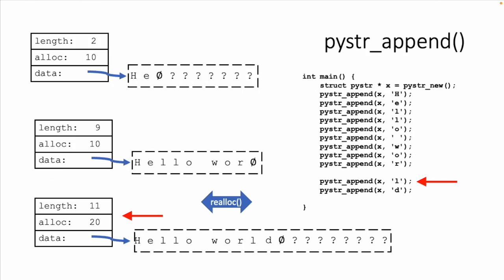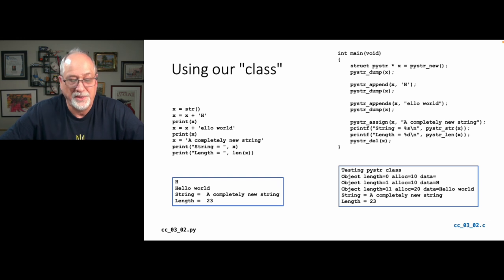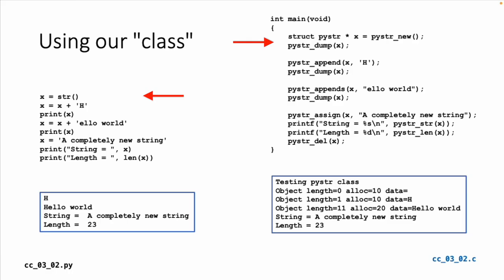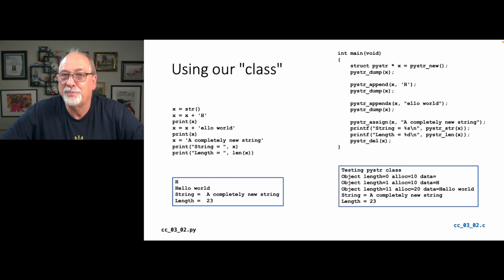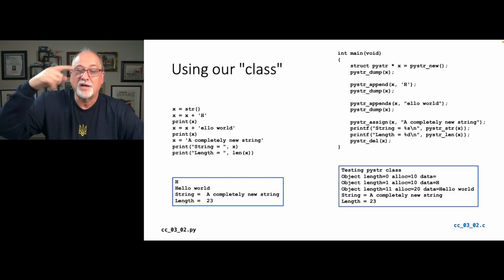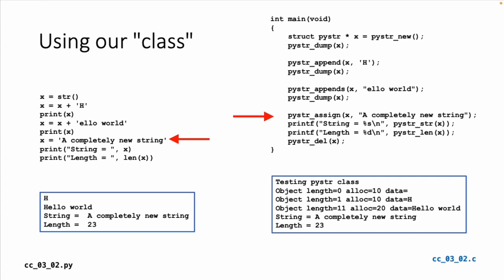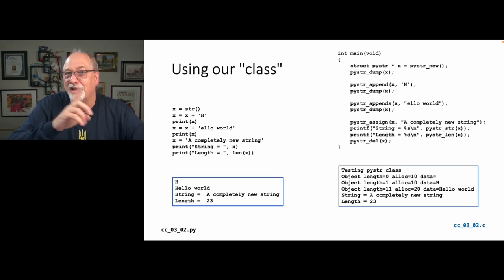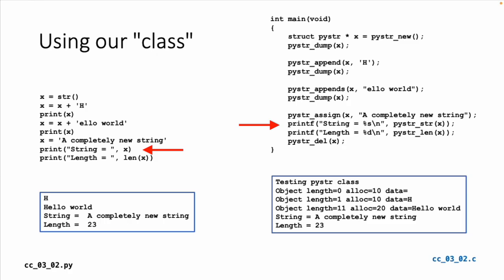Now we have 20 characters and plenty of space for L, D, and backslash zero. Here's the code to test our class: create a new object, dump it, append a single character H, dump it, append a string — where append s just calls append repeatedly for each character. Then assign a completely new string, which means resetting length, checking size, and doing reallocation if needed. Then ask PyStr underscore str for a printable string and PyStr underscore len for the length.